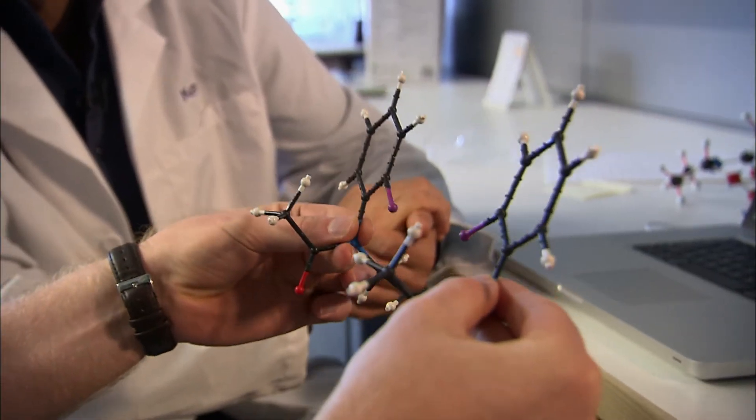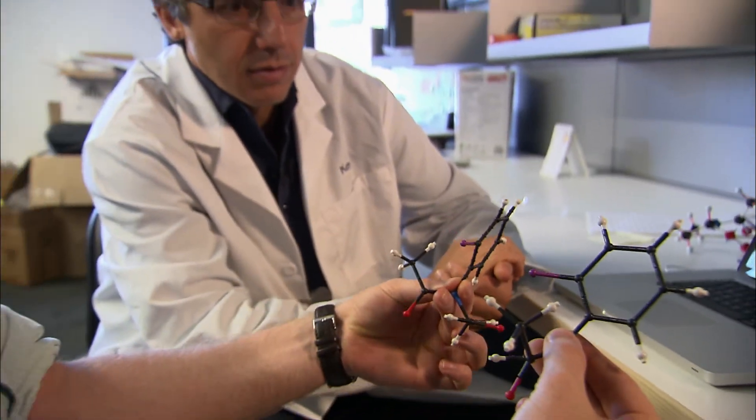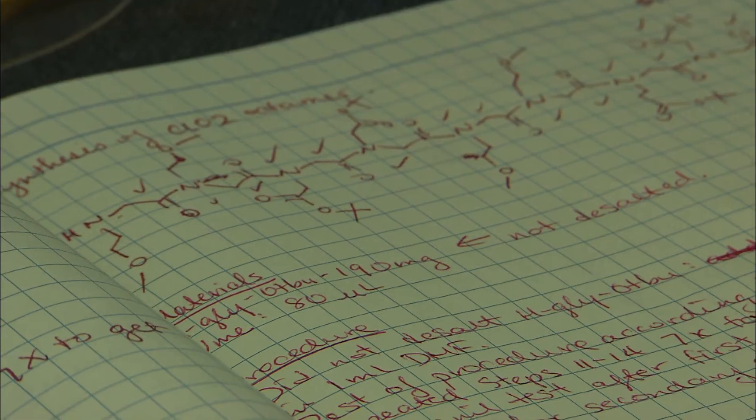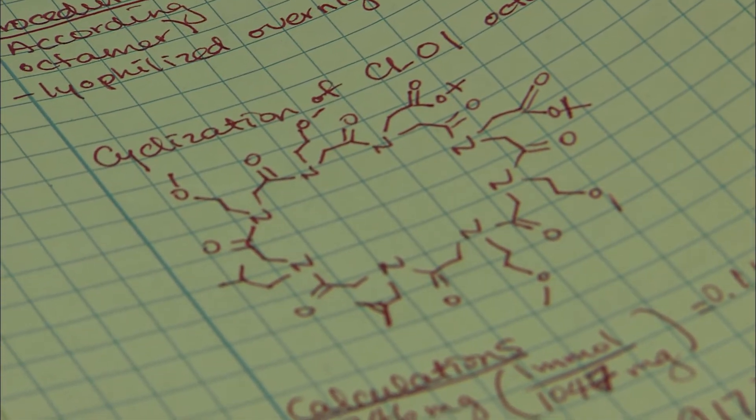But in order to get these new molecules to fold into just the right shape, Kirshenbaum needs to assemble chains of amino acids into a specific pattern. The placement of each molecule in this pattern determines how the chain will fold and what shape it will eventually have.